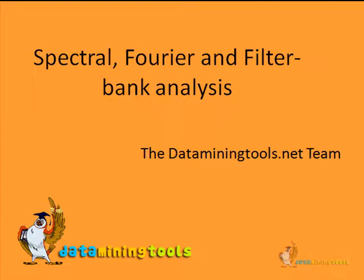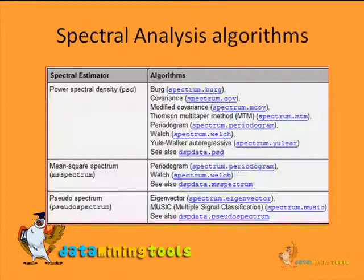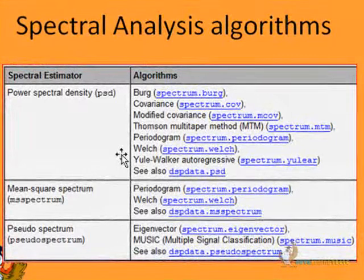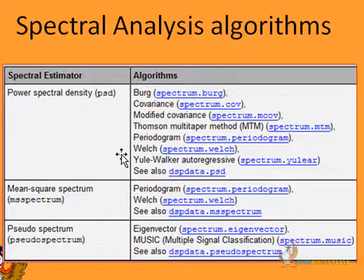Now we come to spectral, Fourier, and filter bank analysis. These are some of the spectral analysis algorithms which MATLAB supports. We have algorithms for power spectral density (PSD), the Burg method, covariance, modified covariance, Thompson's multitaper method, the periodogram method, the Welch method, and the Yule-Walker autoregressive method.